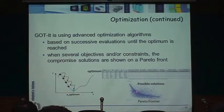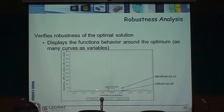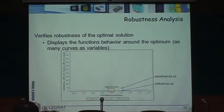The Pareto front tells you: anything above these lines is not feasible, and then you have a population which is slightly dominant — the optimum is probably somewhere right in the middle. Once we have the optimum, we assess robustness — I look at the variation of the objective function versus different parameters. For example, if moving x1 causes the objective function to change a lot, that's a sensitive parameter. Along another parameter, the objective function barely changes — that's a very robust parameter.